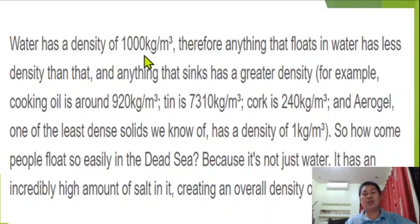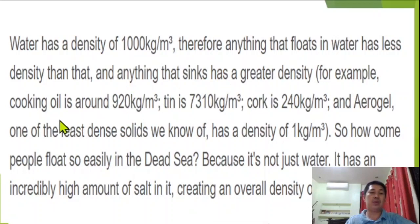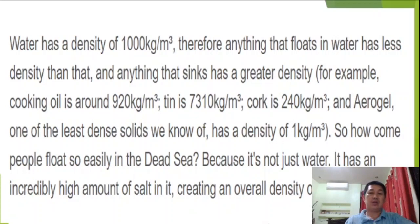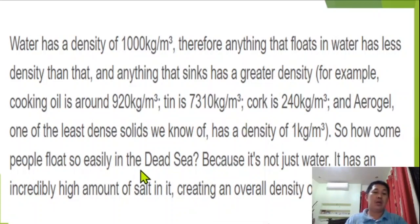Water has a density of 1,000 kg/m³ or 1.0. Therefore, anything that floats in water has less density than that, and anything that sinks has a greater density. For example, cooking oil is around 920 kg/m³ or 0.920. Tin is 7,310 kg/m³. Cork is 200 kg/m³, and aerogel — one of the least dense solids known — has a density of 1 kg/m³.